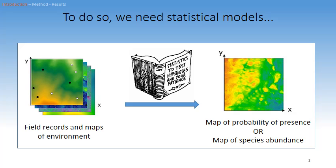To do so, we need statistical models. These models take data from the field and different maps of habitat information to create a predictive map of species presence or a map of species abundance.